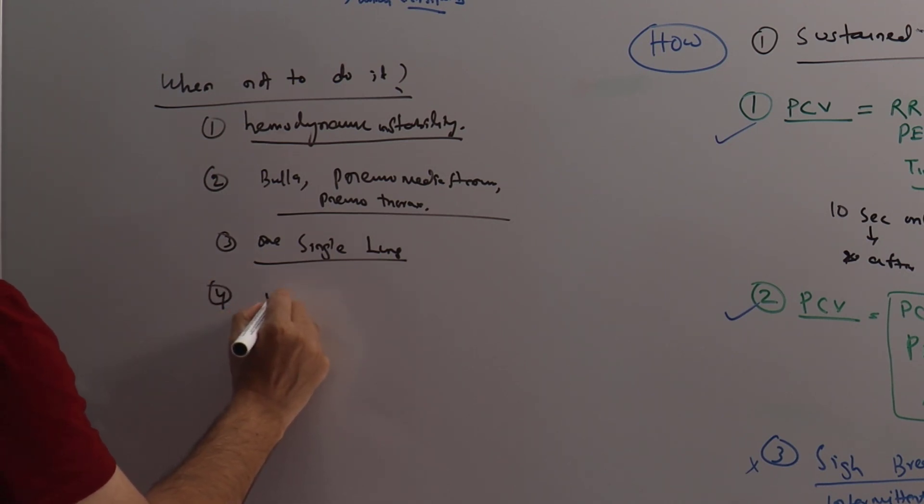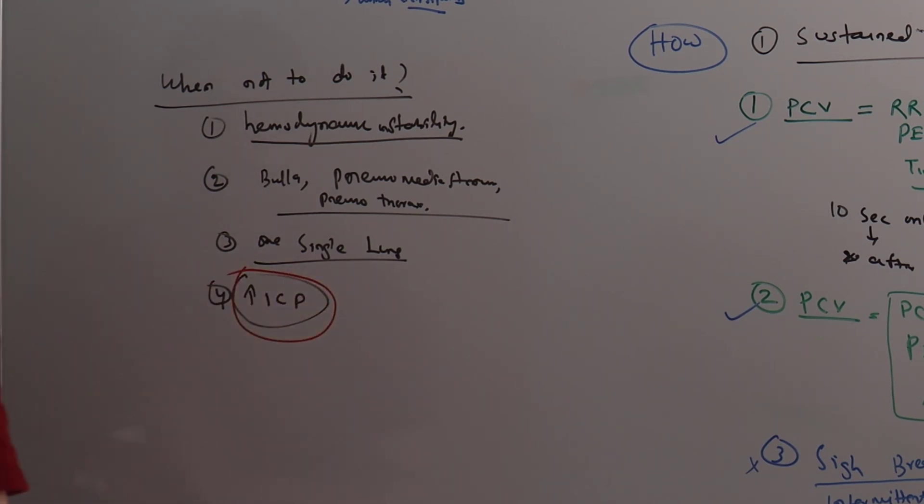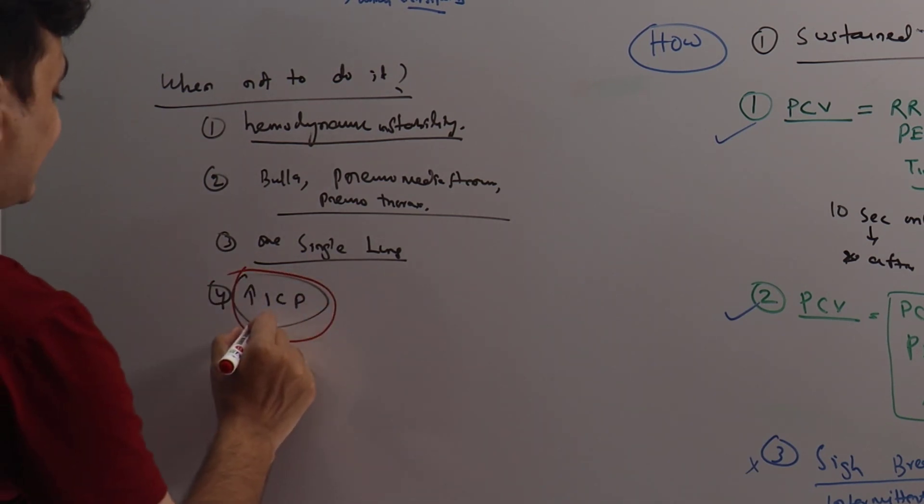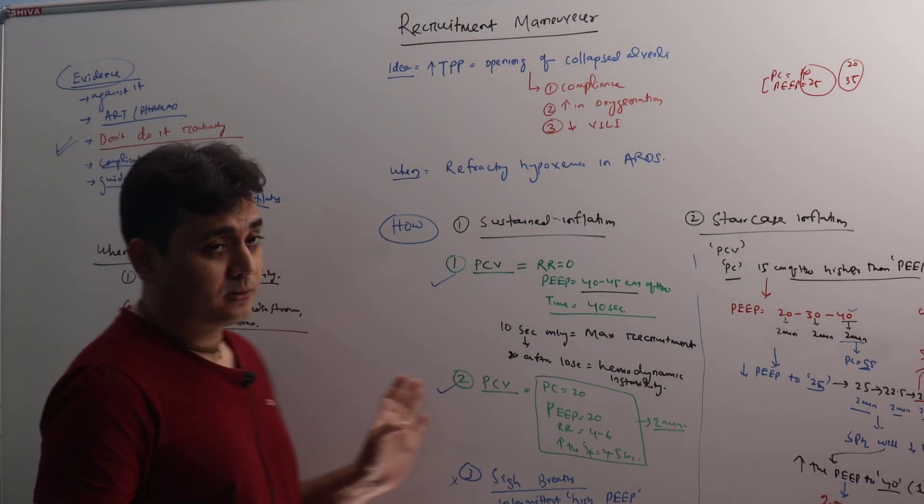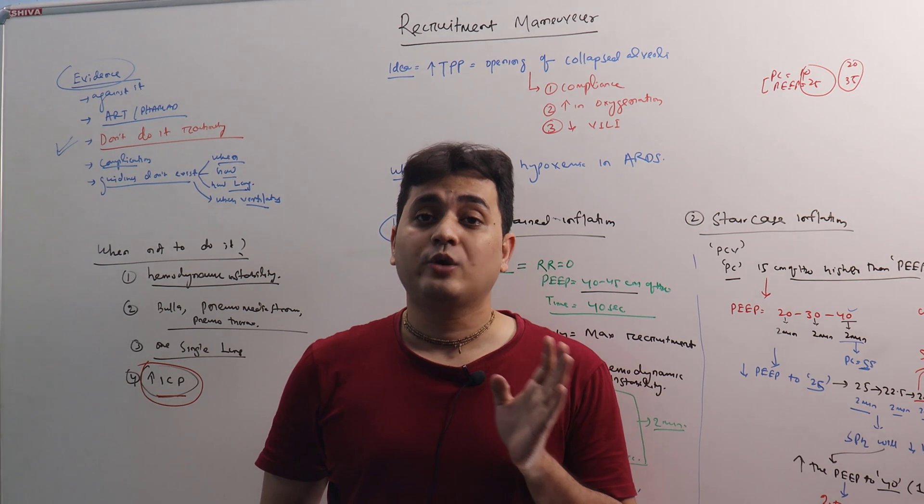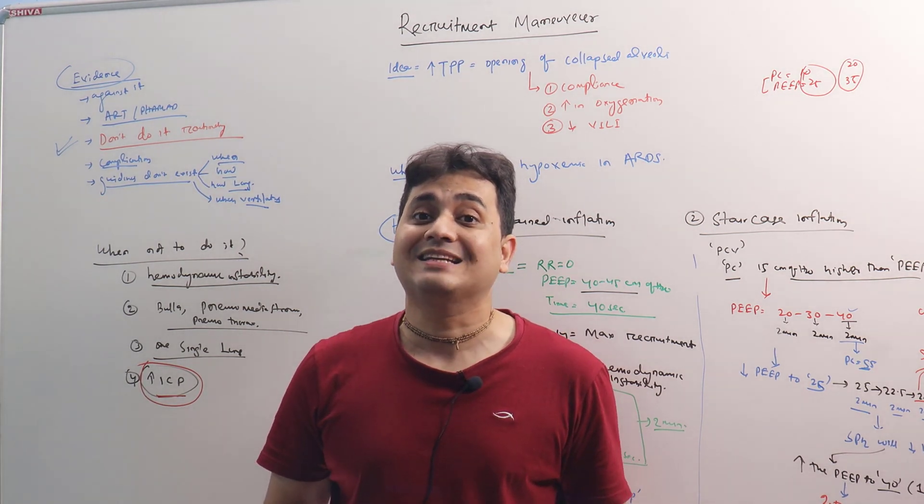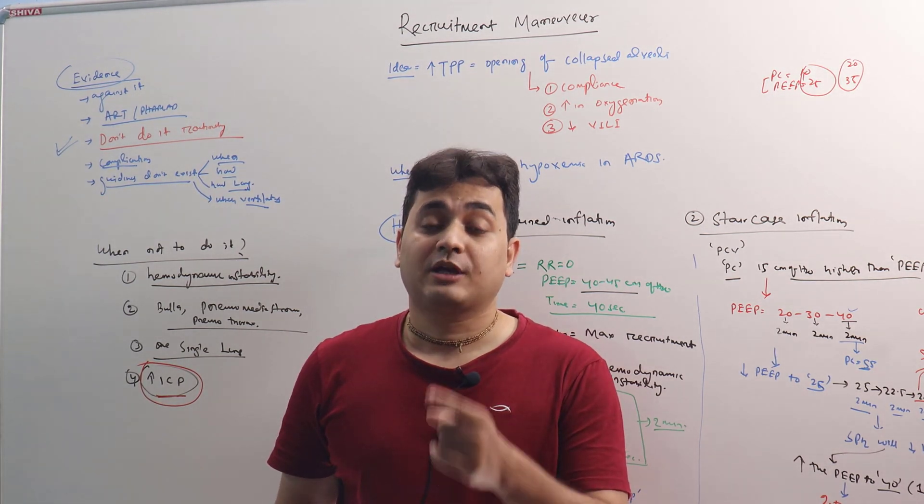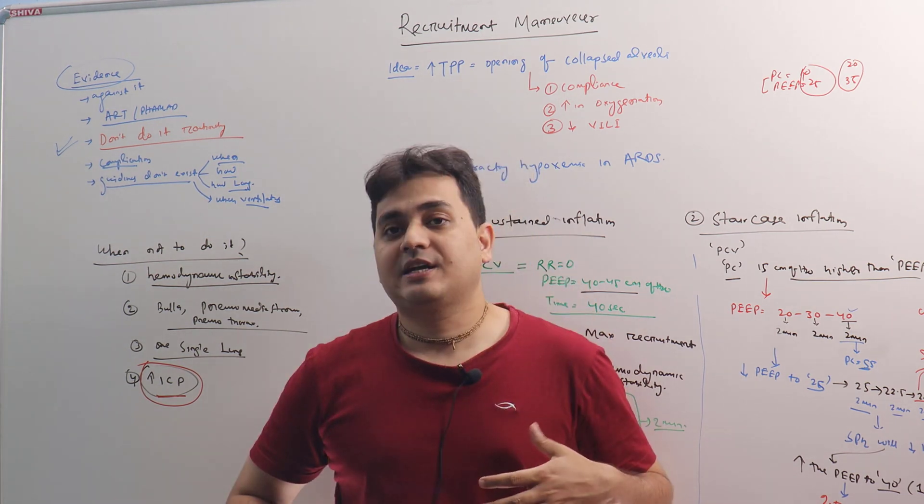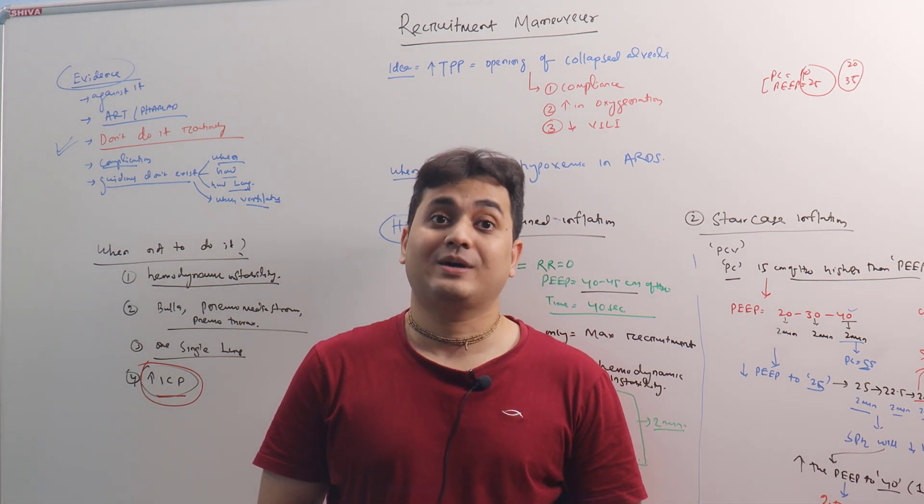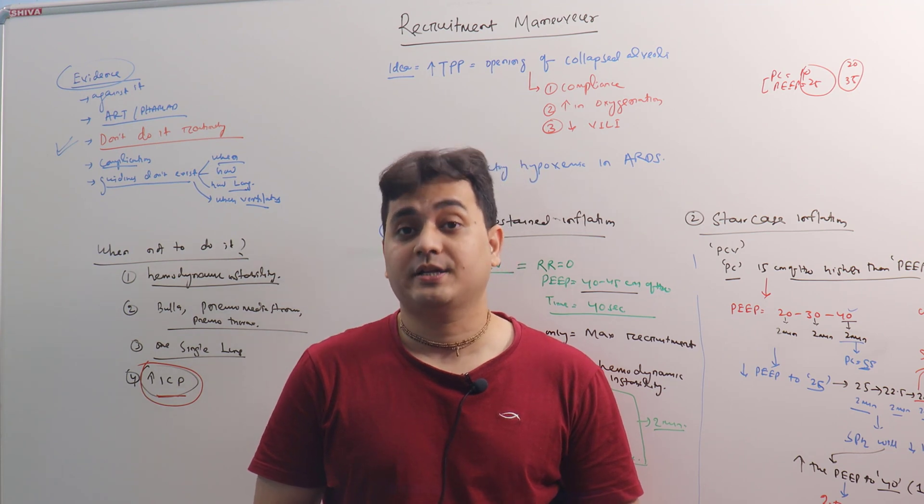And four: never do it in increased ICP. Never do it in a traumatic brain injury patient with ARDS who may have an increase in ICP. Do not do it because there will be decrease in venous return from the upper extremities and it can increase the ICP to a dangerous level, producing herniation.